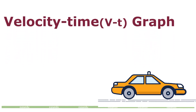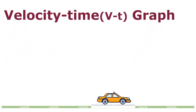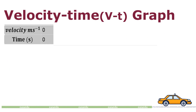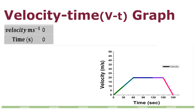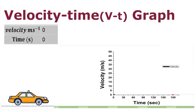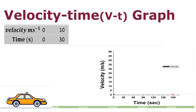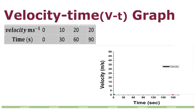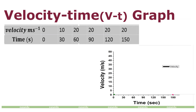Let's consider you are ready to go for a short trip on a straight road. Initially, you are at rest. After 30 seconds, your velocity reached 10 meters per second. After 60 seconds, your velocity reached 20 meters per second. And then until 150 seconds, you kept a uniform velocity of 20 meters per second. At 150 seconds, you applied the brake and your car stopped at 180 seconds.